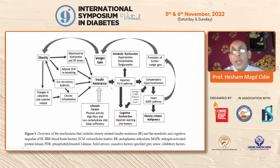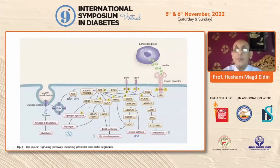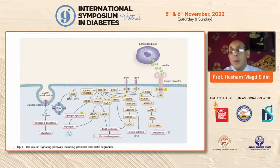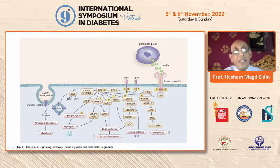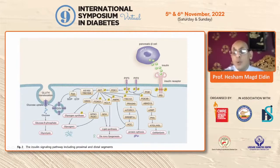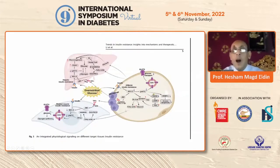The only way to stop this vicious circle is lifestyle factors. Simply, insulin after attachment to its receptor passes through the insulin receptor substrate, affects PI3K, which causes release of GLUT4 transporters to the cell surface, enabling glucose to enter the cell for glycolysis, glycogenesis, lipogenesis, and protein synthesis, while also stopping lipolysis.